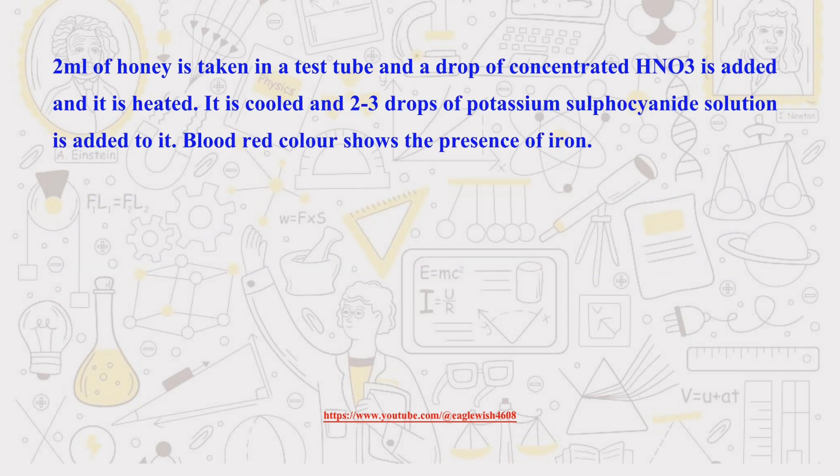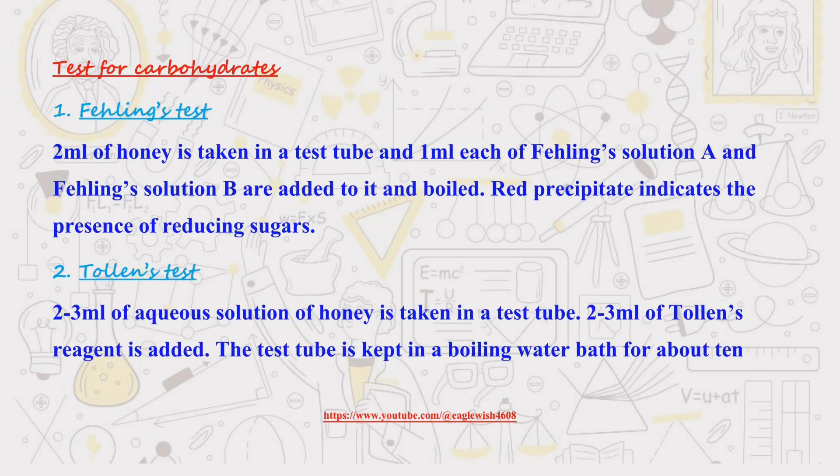Feel free to like, share, and subscribe to our channel. With minerals covered, we'll move on to the carbohydrate analysis. This includes classic tests like Fehling's test and Tollens' test, revealing the presence of reducing sugars.